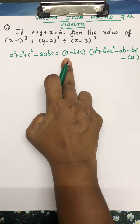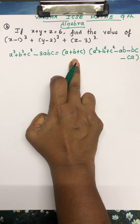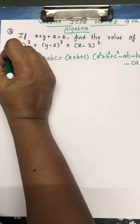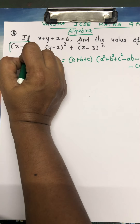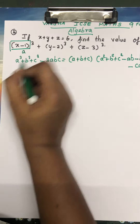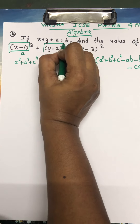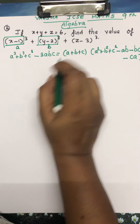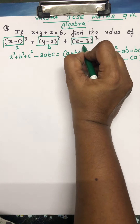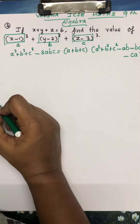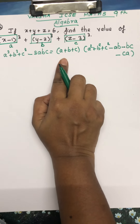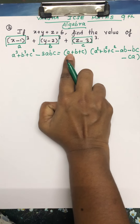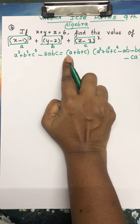We are going to substitute into this identity. So, what is our a? Here, a = (x − 1). What is our b? (y − 2) is our b. And c = (z − 3).